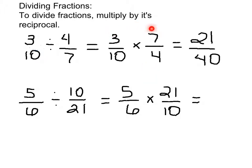You multiply the numerators, 7 times 3 is 21, and multiply the denominators, 10 times 4 is 40, and the answer is 21 fortieths.